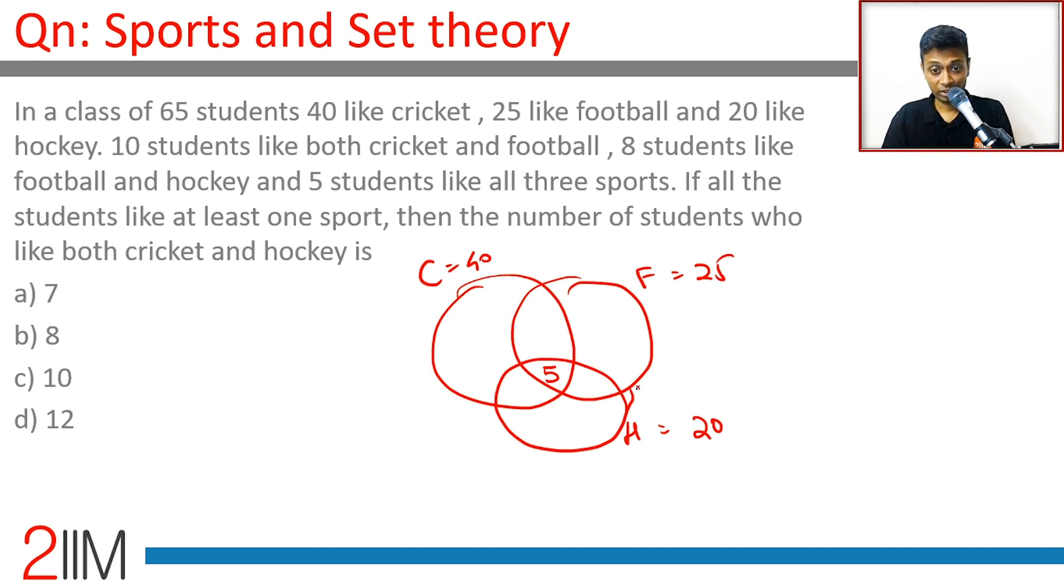The total is 65. 5 like all 3. 10 like cricket and football, that is 10, so this overlap will be, this area will be 5. 5 like all 3, 10 like cricket and football, so this will be 5. 8 like football and hockey, there is 8, 5 here, so 3 here.